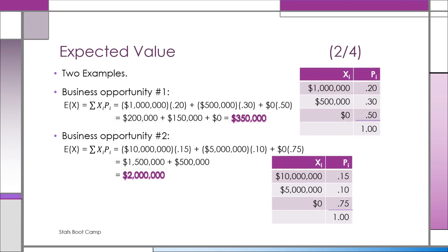Let's look at these two business deals. Business opportunity one: You have a 20% chance of making a million, a 30% chance of making $500,000, and a 50% chance of making zero. Well, you might analyze it through expected values. See the way we symbolize expected value? E, the X in parentheses.